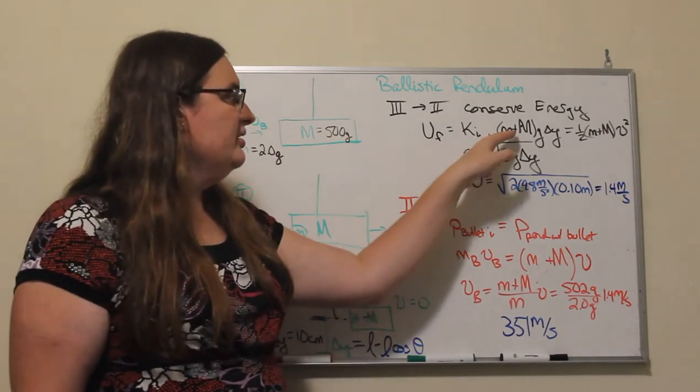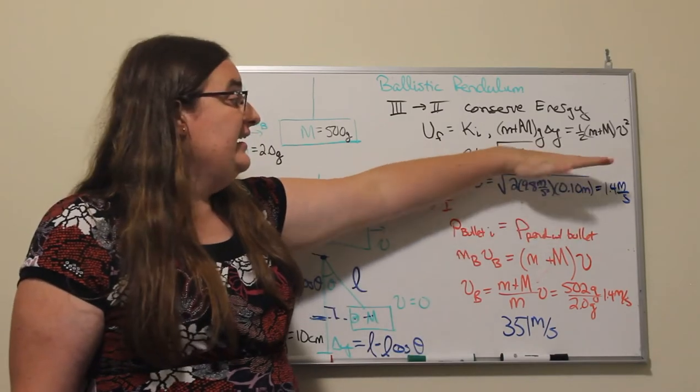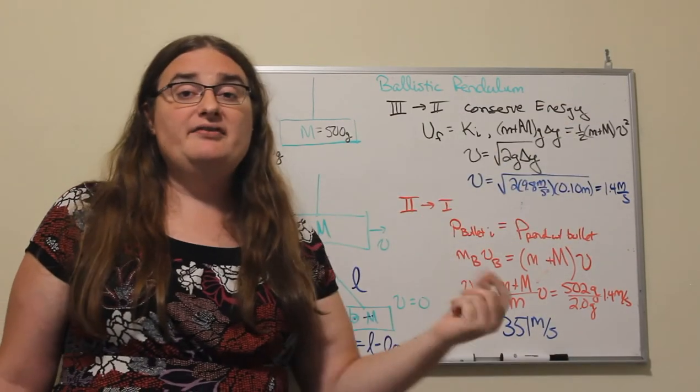So when the pendulum is at the top, it has a potential energy and its kinetic energy is zero. And that potential energy will be equal to the total mass times the strength of gravity times the change in height of that pendulum.